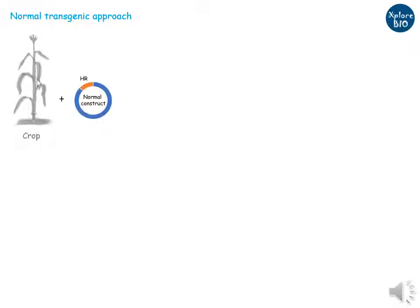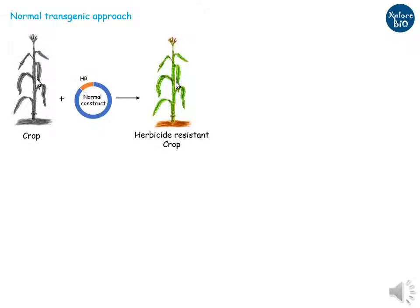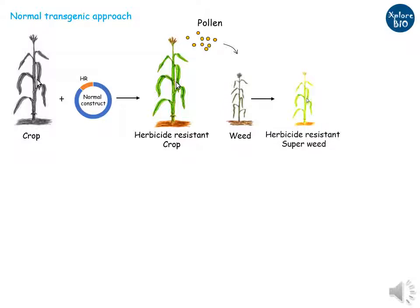To make it clearer, consider this example. When a normal transgene construct is used to confer herbicide resistance to the crop, there are fair chances that this herbicide-resistant gene may spread to the weedy relatives via pollen, thus resulting in a herbicide-resistant superweed.